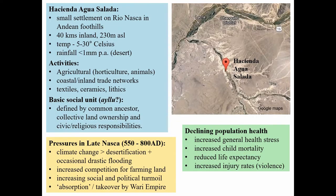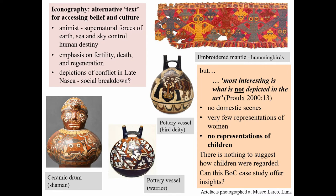The Nazca boy came from a small farming settlement on the Nazca River in the desert foothills of the Andes. Hacienda Aguasalada likely consisted of a few families defined by a common ancestor, with everyone sharing economic, social, and cultural responsibilities. The late Nazca period was defined by environmental and social pressures, with general health stress and frequencies of disease and injury on the increase. Rich Nazca iconography reflects cosmology and culture, suggesting animist beliefs with emphasis on fertility, death, and regeneration. Notably, there are no domestic scenes, few representations of women, and no representations of children in the art — leaving very little evidence of how Nazca children were regarded.